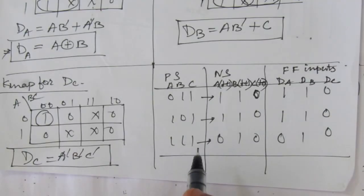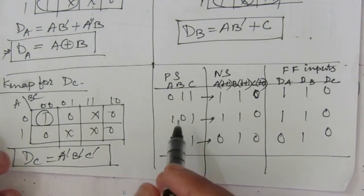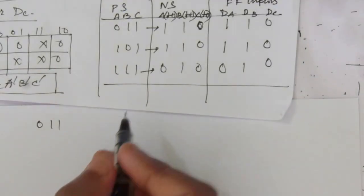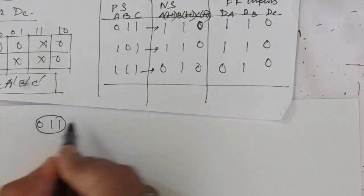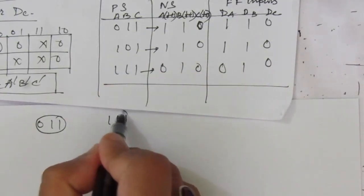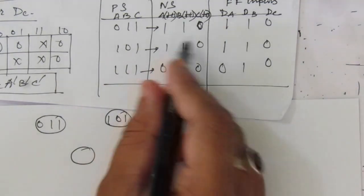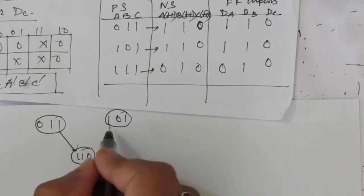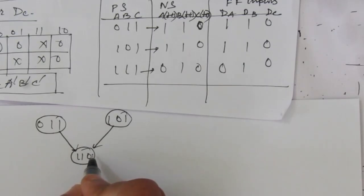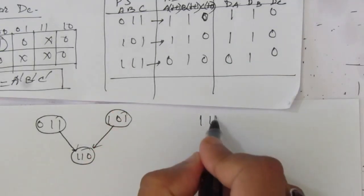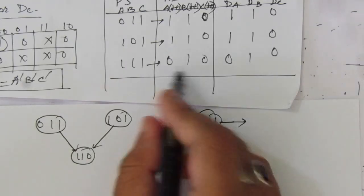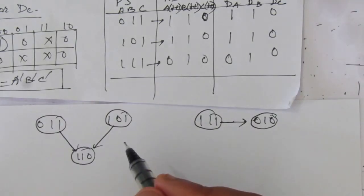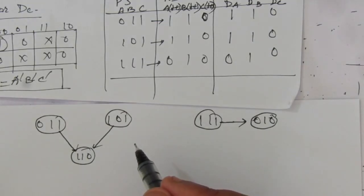If we design the circuit using these equations, it will automatically recover from any unused state. For unused state 7 (1,1,1), the next state is 0,1,0 — that is 2, which is also a used state. So the circuit will automatically correct if any of the unused states occur at the output. There is no lockout condition.